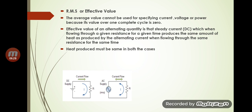The heat produced must be the same in both cases. We know heat equals I²RT. For the DC circuit this is simply I²RT, where I is the DC current, R is resistance, and T is time. For the AC circuit, splitting the current into N instantaneous values I1, I2, ... IN, the heat produced is (I1²R + I2²R + ... + IN²R) × T/N.